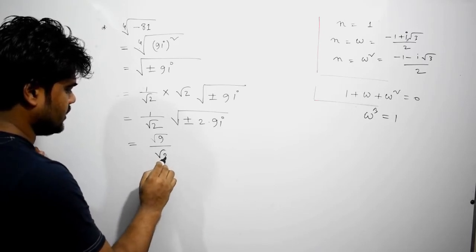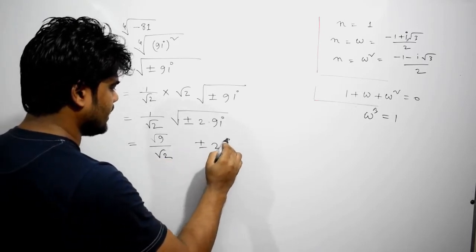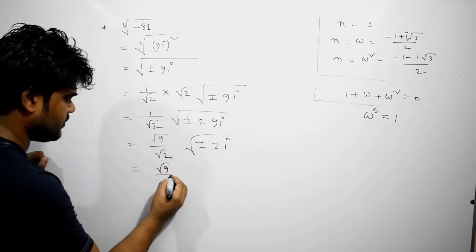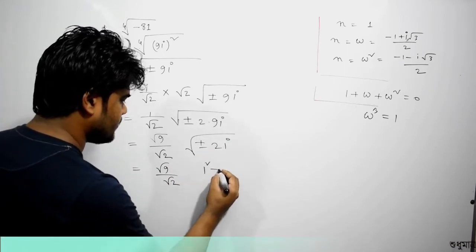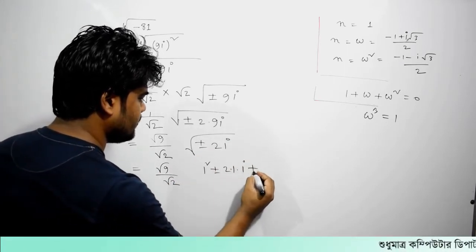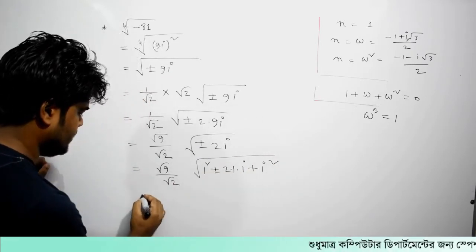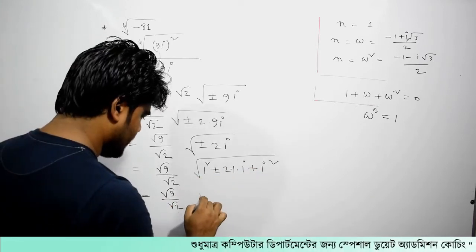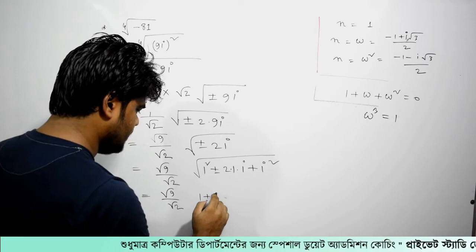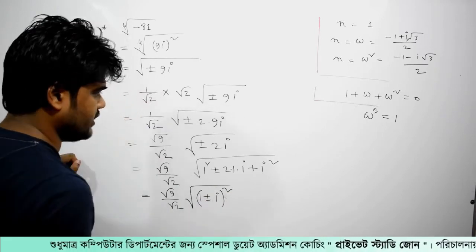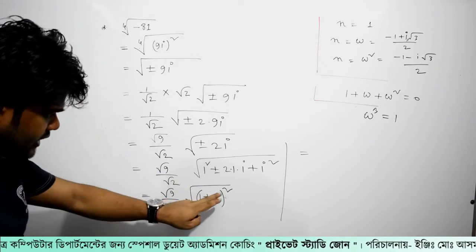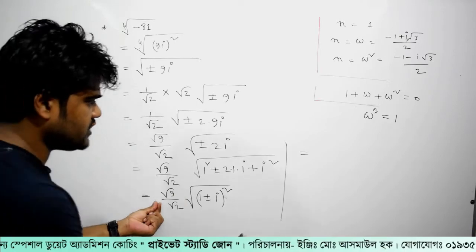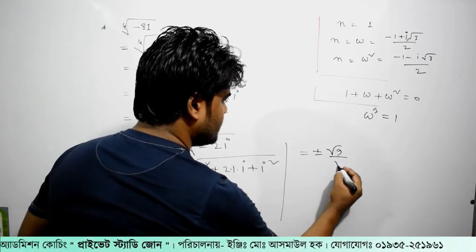Divided by root over 2, that's why I have to do plus minus 2i. Now I am going to write a square plus minus 2ab plus b square root over that. So I write root over 9 divided by root over 2, and I will write a plus minus b whole square root over. So a root, eta plus minus root over 9 root over 2.